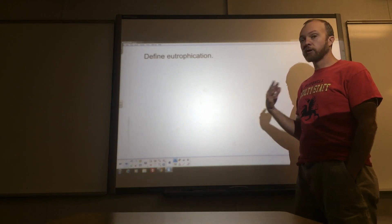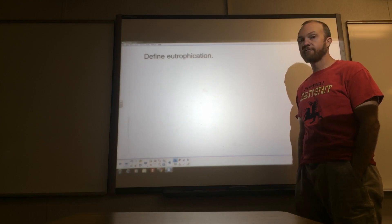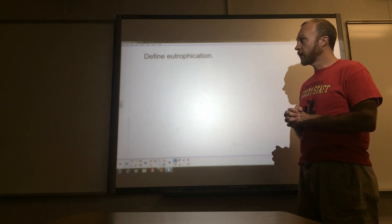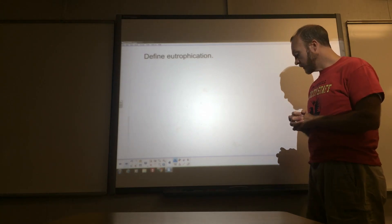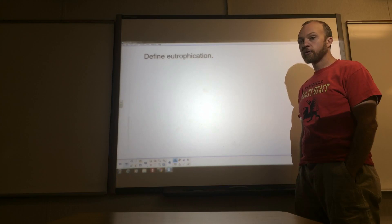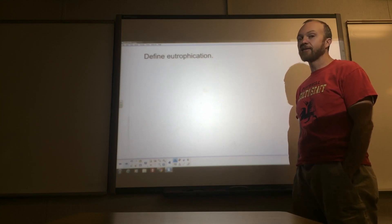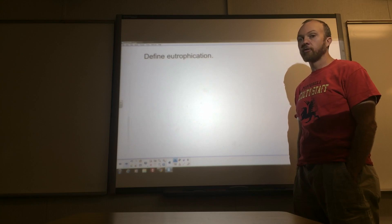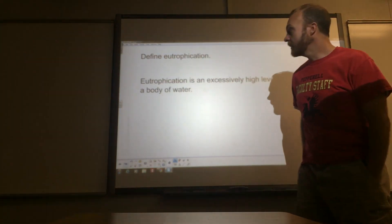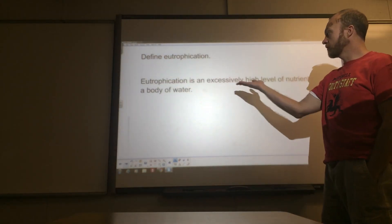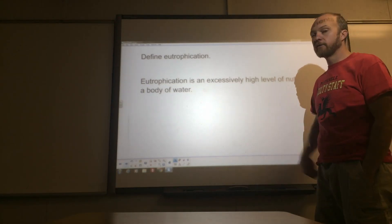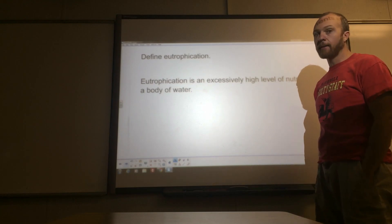Another term you'll see less often but occasionally in AP questions is 'define.' Most of you know how to give a definition — we just have to explain what something is unambiguously. If you've done your reading, you should know what eutrophication is. A simple definition would be: an increase in nutrients in the water supply, or an excessively high level of nutrients in the water supply. We're just telling what it is — we don't have to elaborate, we just explain what the term means.